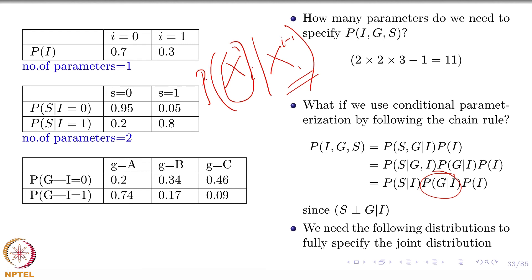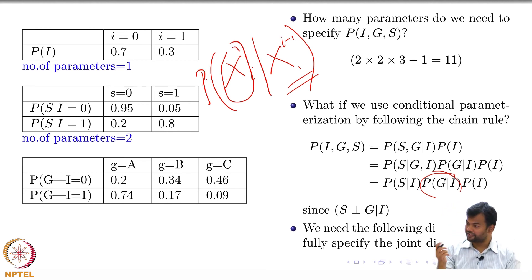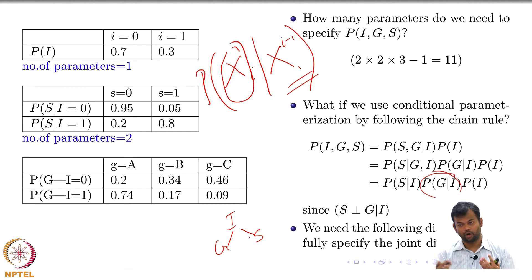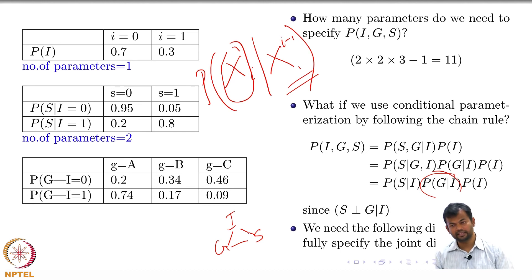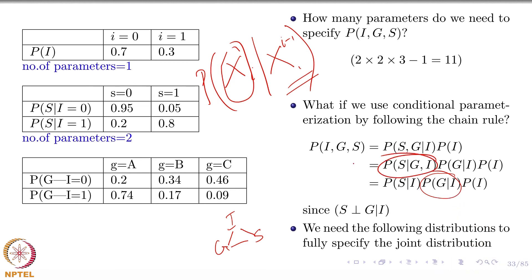That is the importance of conditional independences. In whatever problem you are trying to model, you have to identify these conditional independences — no one gives them to you. If we had not assumed conditional independence of G and S given I, we would still need 11 parameters, because that term in the chain rule would not simplify.